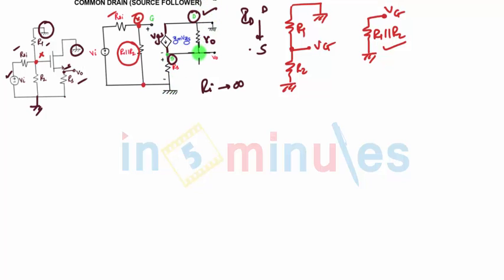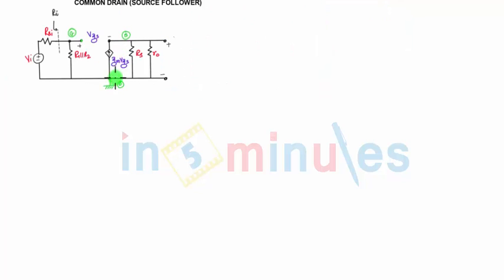This point is again ground. You can say it is nothing but connected in parallel with rO. So hence it is drawn like this. You can say drain - the current is flowing from drain to source. Hence GMVGS is drawn in this format.